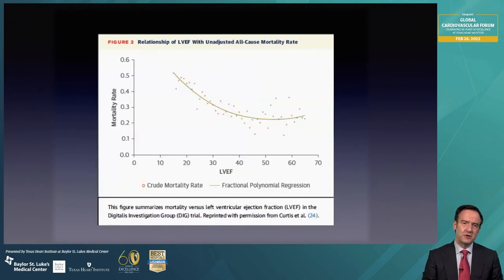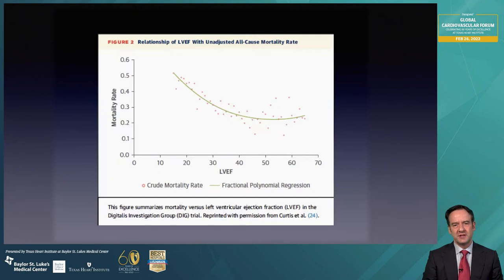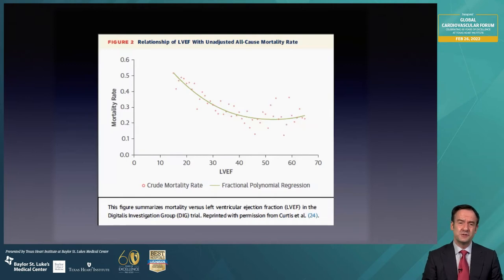Ejection fraction in the patient with heart failure functions very well in terms of prognosticating mortality once the ejection fraction goes below 40%. But you can appreciate the lack of utility of this modality when trying to prognosticate patients with heart failure with preserved ejection fraction, which is very prevalent in the United States — with a prevalence north of 50% among the heart failure patients we see on a daily basis.